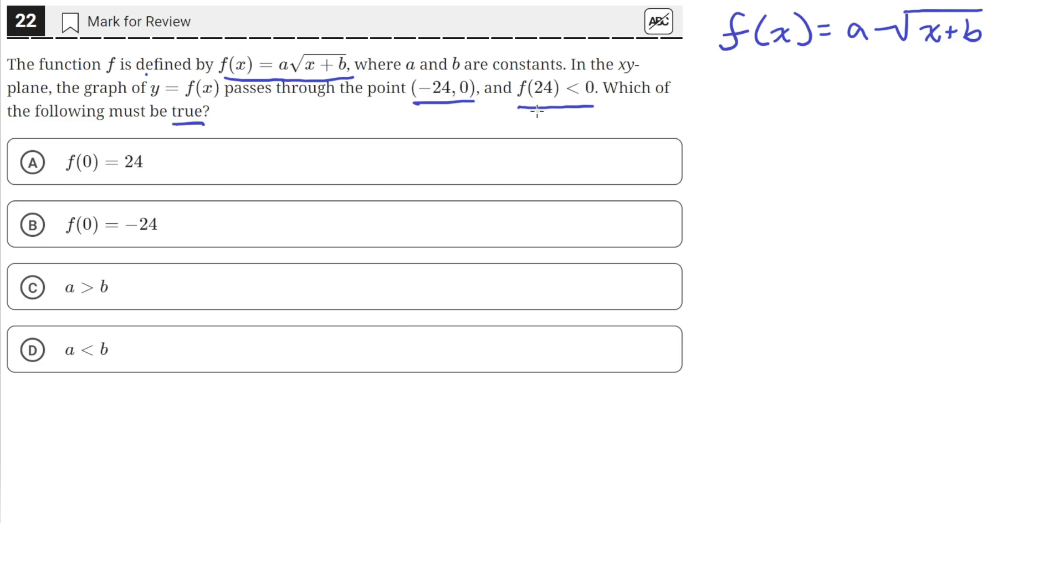Using the second piece of information first, we're given that f(24) < 0. So f(24) = a√(24+b). We plugged in the value of 24 for x, and we know this quantity is less than 0.